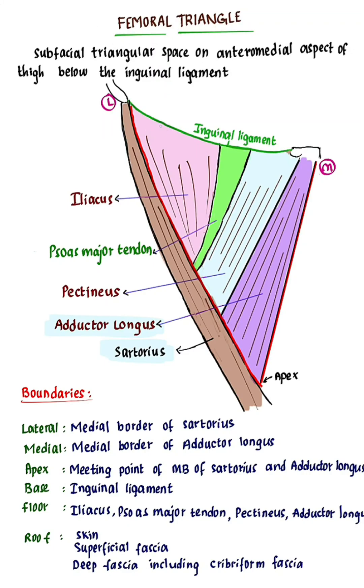Femoral triangle. It is a subfascial triangular space on the antero-medial aspect of the thigh, below the inguinal ligament.